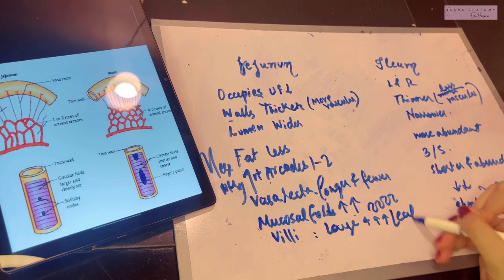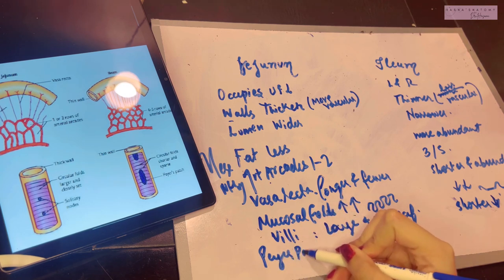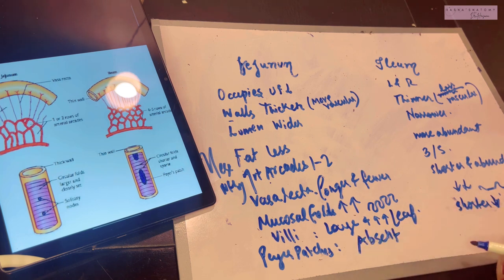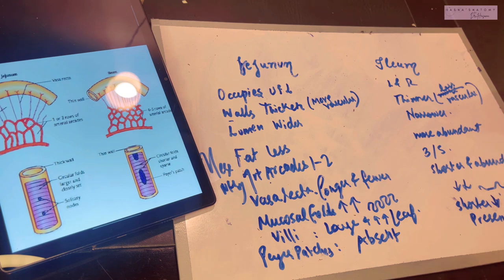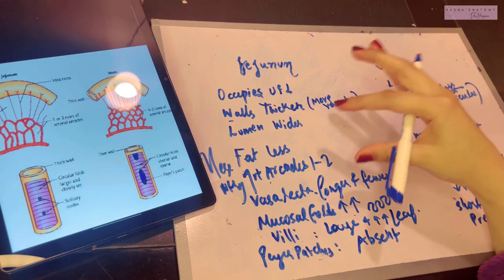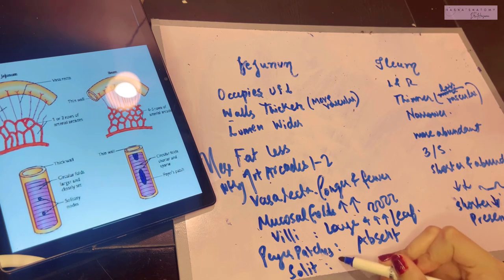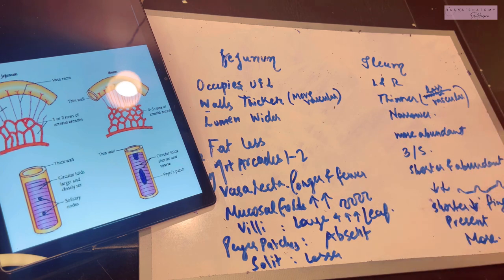Ileal villi are described as finger-like, in contrast to the leaf-like villi of the jejunum. Regarding Peyer's patches: in the jejunum they are so rare as to be almost absent, while in the ileum they are clearly present. This is a key histological feature that allows instant identification of a slide as jejunum or ileum. Similarly, solitary lymphoid follicles are fewer in the jejunum and more numerous in the ileum.